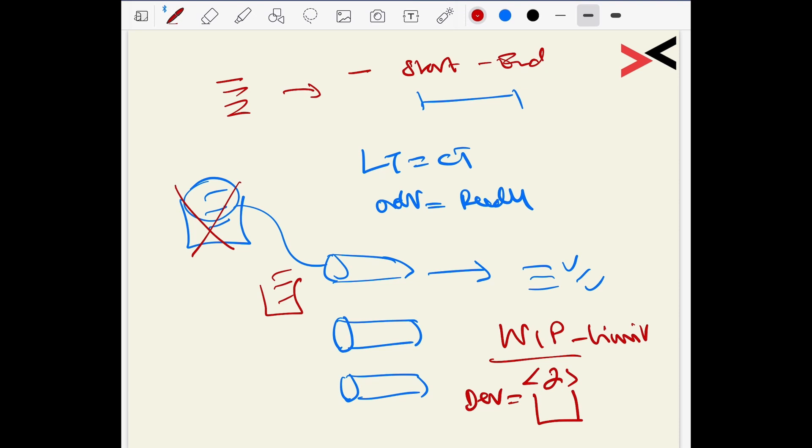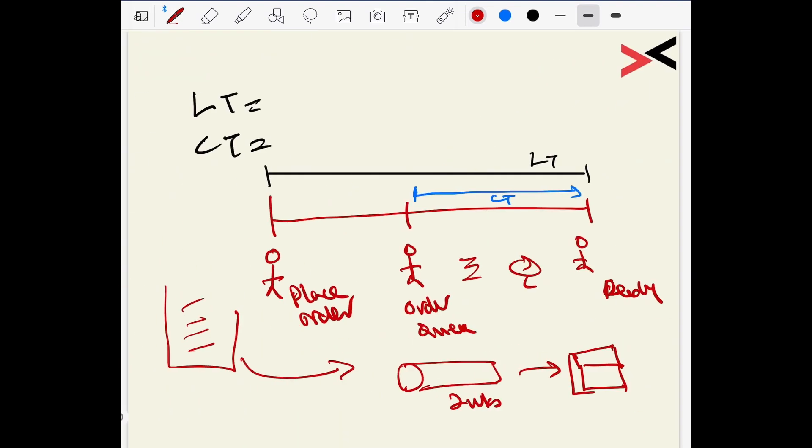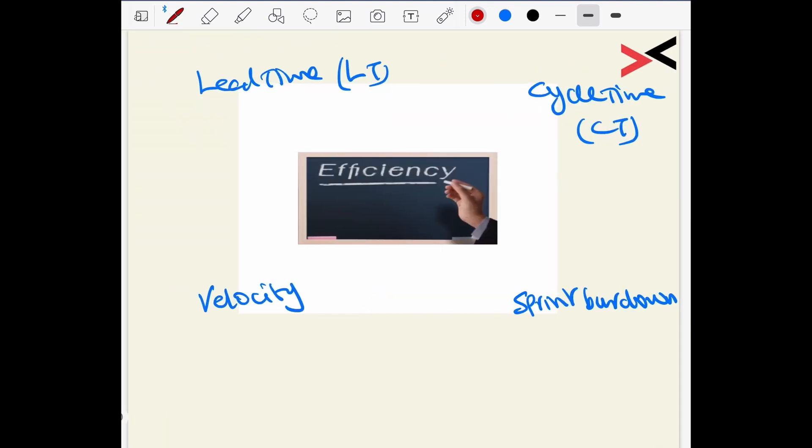So just to summarize, the lead time is how you process the work and how quickly you process that work is cycle time. So if ever you're asked in your job to describe how would you measure the efficiency of your project, you will say that I have the velocity to look at, I have the sprint burndown chart to look at, I also have the lead time and the cycle time to work on. So these four metrics will give you some idea in terms of how efficient the project is actually moving with the team that you have at your disposal.